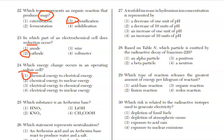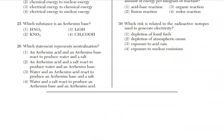For 25, which substance is known as an Arrhenius base? Arrhenius base is a metal, an OH, which right here, it's choice 3.